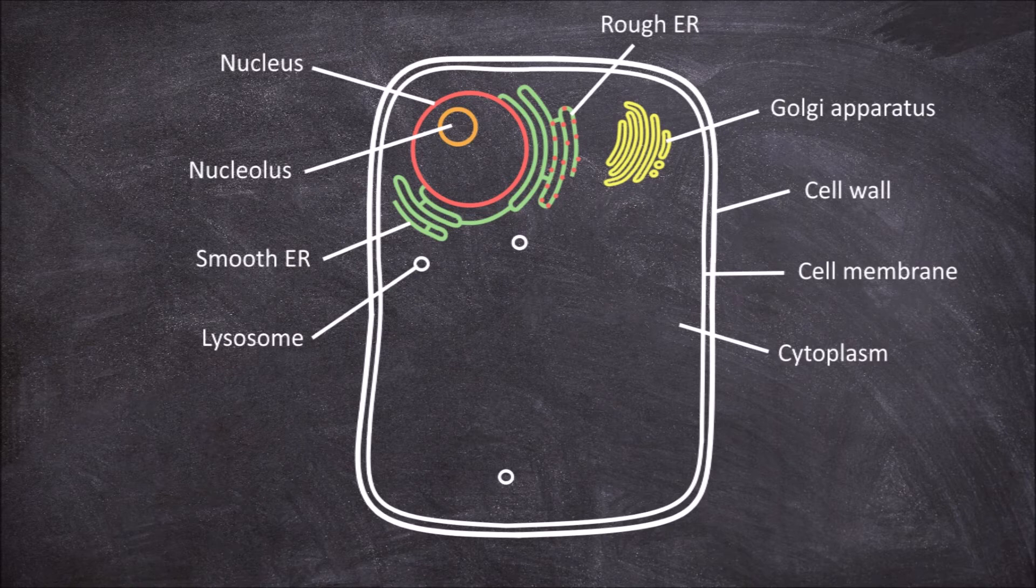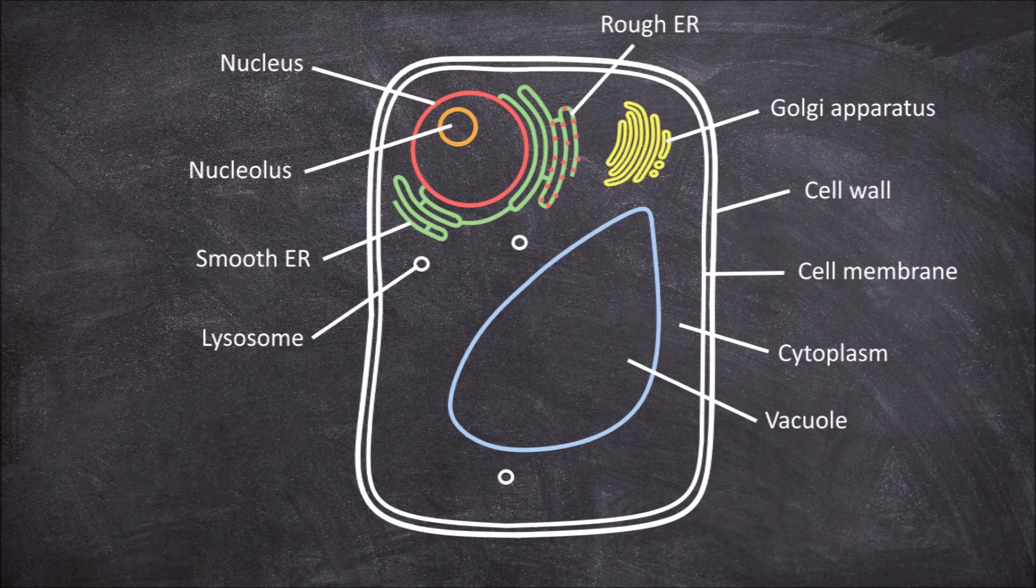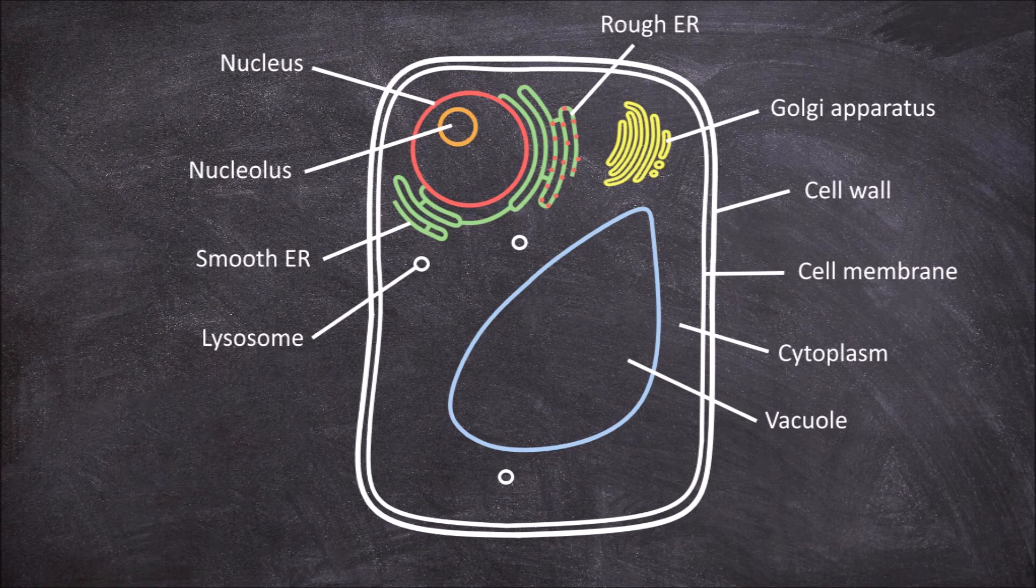Plant cells also have a large vacuole. These are organelles filled with a mixture of water and molecules. They function in storage for the cell. They can store food and nutrients, and they can also contain waste products that need to be removed from the cell.